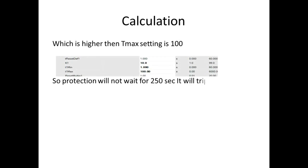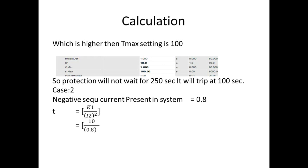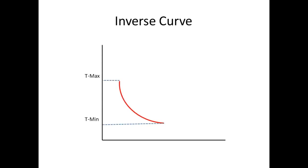Now we can go for case 2. In this case we can consider the negative sequence current present in the system is 0.8. So we get tripping at 15.62 seconds. So in this case it follows the formula. If the calculated time exceeds our T max then our calculated time will not follow, only the T max will follow.